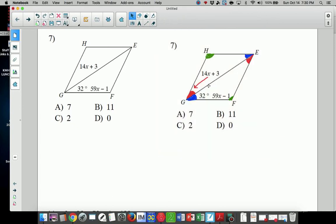Looking there, I've went ahead and shaded in some angles that are congruent. I know if this angle here is 32, then this blue angle opposite has to be 32, not only because the property of parallelograms but also alternate interior angles. Then this 14x plus 3, the red, has to be congruent with the red angle here, and h has to be congruent with f, which is 59x minus 1.